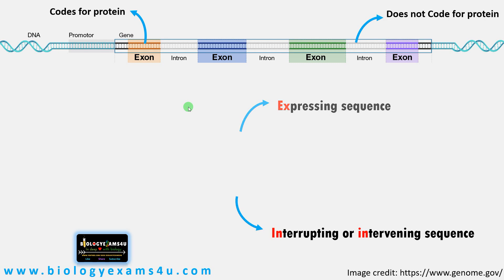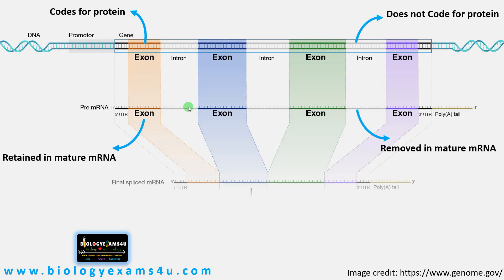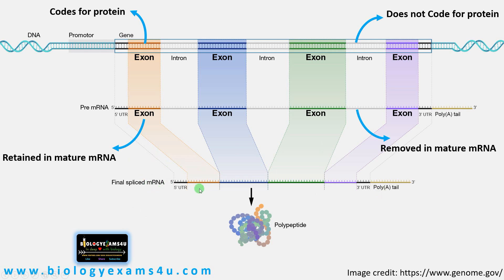During transcription, a pre-mRNA is produced, and processing by the enzyme complex spliceosome splices out the introns and joins the exons together to form the final processed mRNA. In this processed mRNA there are only exons — the coding sequences — that code for a protein or polypeptide. However, the original DNA ORF has both coding and non-coding sequences.